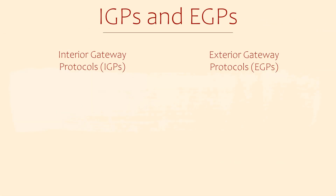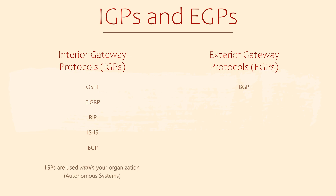As I said earlier, there are a few routing protocols to choose from. They fall into two groups: Interior Gateway Protocols or IGPs, and Exterior Gateway Protocols or EGPs. IGPs fit within your organisation, and there are quite a few IGP options available. An EGP provides dynamic routing between two different organisations. Routing protocols often call different organisations autonomous systems. The only EGP available today is BGP.